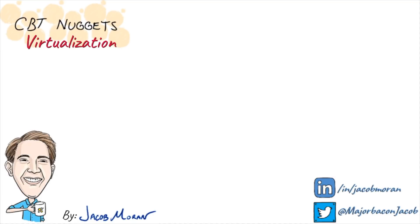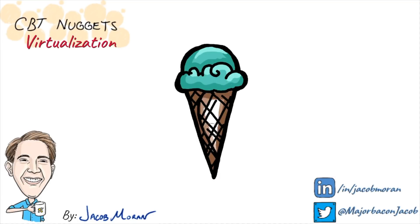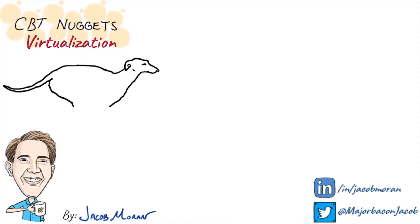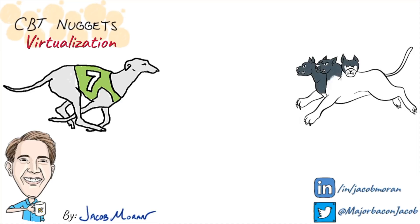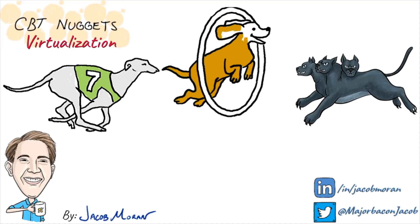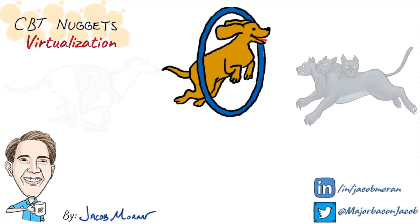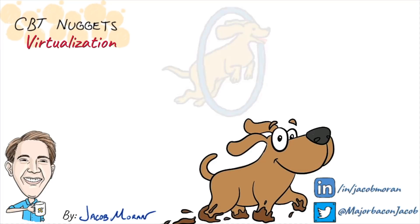Some decisions are more important than others. Choosing the right flavor of ice cream, honestly, not that important. But if you're thinking about getting a dog, getting the right breed is important to make sure it's hypoallergenic or as active as you think you can handle, because you're picking a companion that you're going to be stuck with for a while.